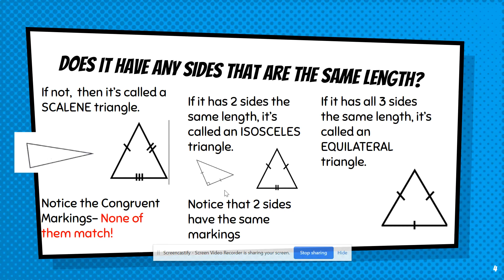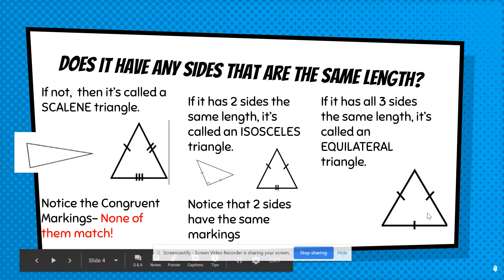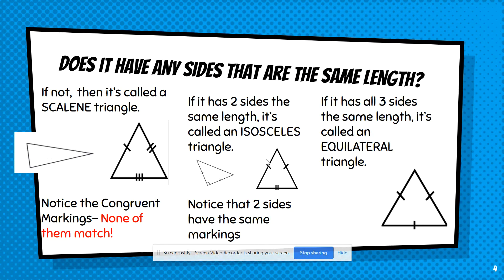So when you look at a triangle, look at its sides and ask yourself: does it have any sides that are the same length? If yes, how many? Are all three the same length — it's an equilateral. If two are the same length, it's an isosceles. And if none of them are the same, then it's a scalene. If you've got that down, that's half your triangle — you've got one part of the name.